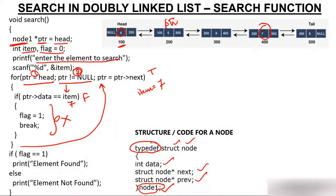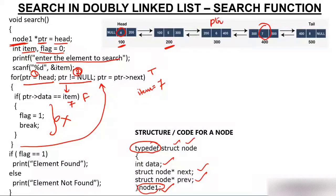You go back to the condition: is PTR not equal to null? PTR is 200, so yes, condition is true. You move inside and check PTR data. PTR data is 5. Is 5 equal to 7? No, condition is false. You do not move inside the if block. You update PTR again: PTR gets PTR next, which is 300. PTR moves to node at address 300.